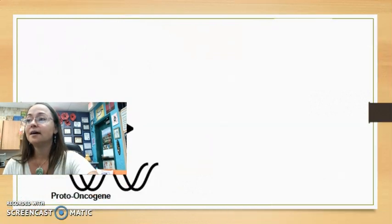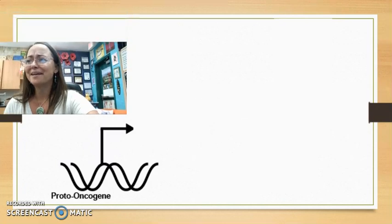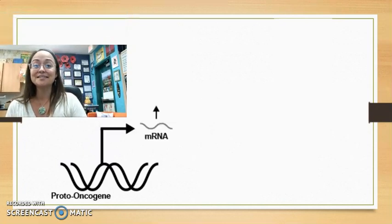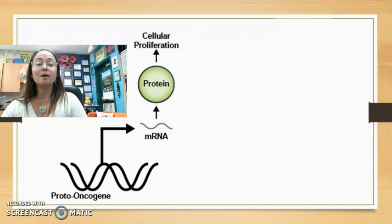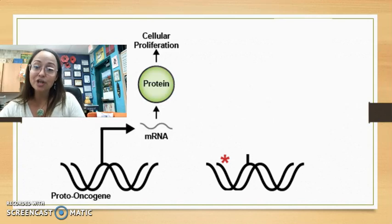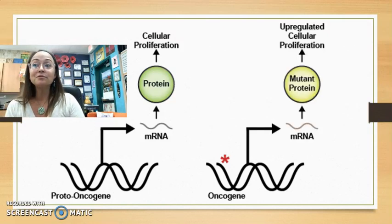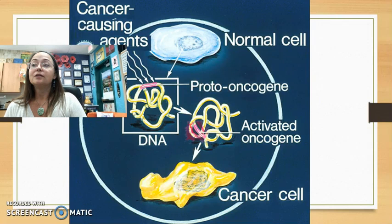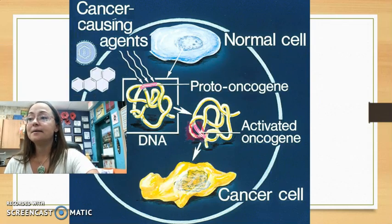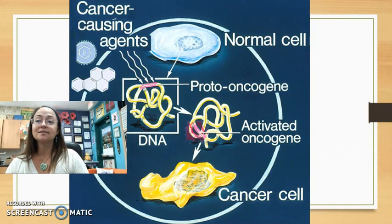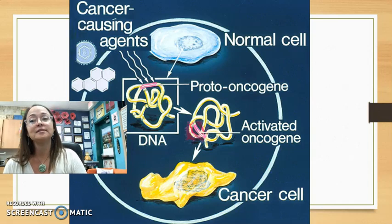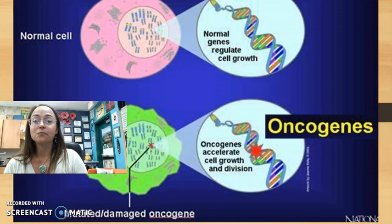Proto-oncogenes normally code for RNA that codes for a protein involved in normal cell division. However, in an oncogene, something mutates that proto-oncogene, and now you have a mutant protein leading to tons of cell proliferation and cell growth. Cancer-causing agents can convert proto-oncogenes to oncogenes, leading to overgrowth of cells.